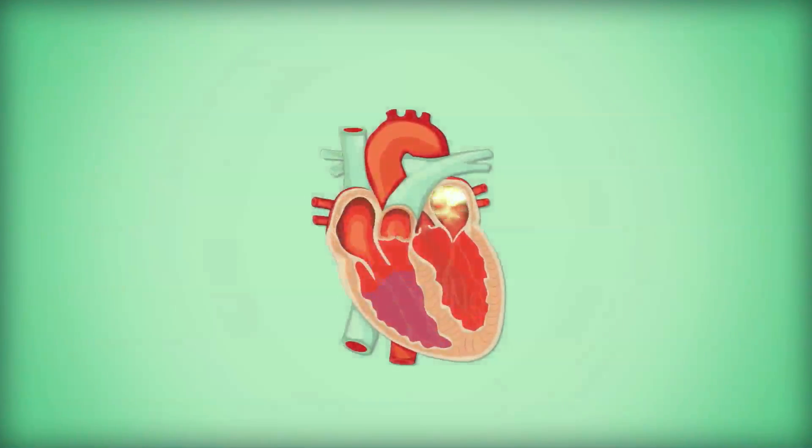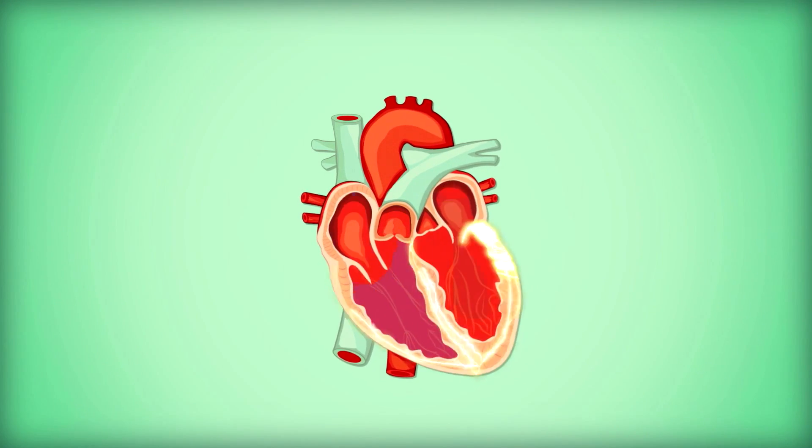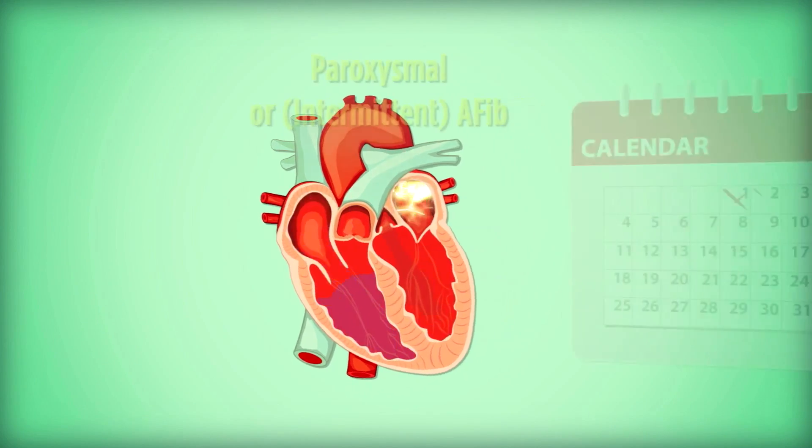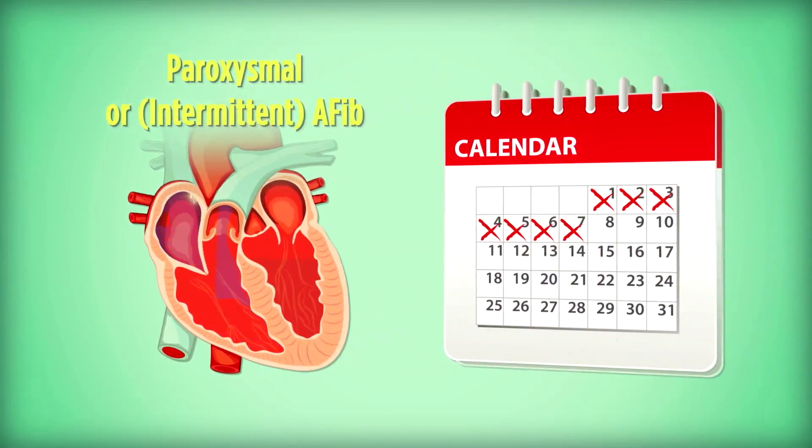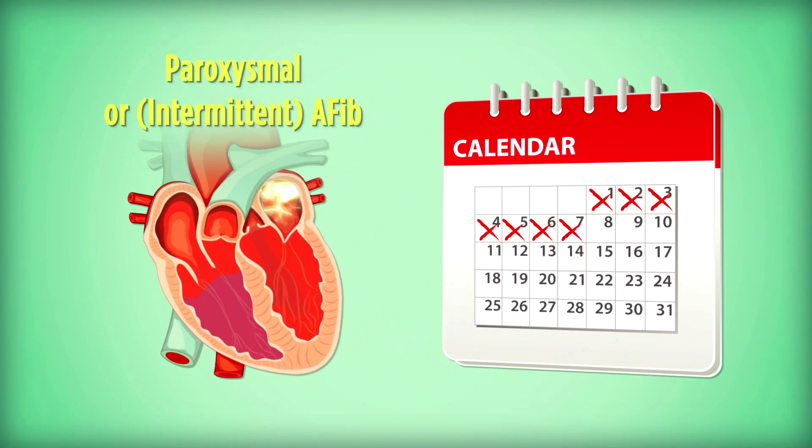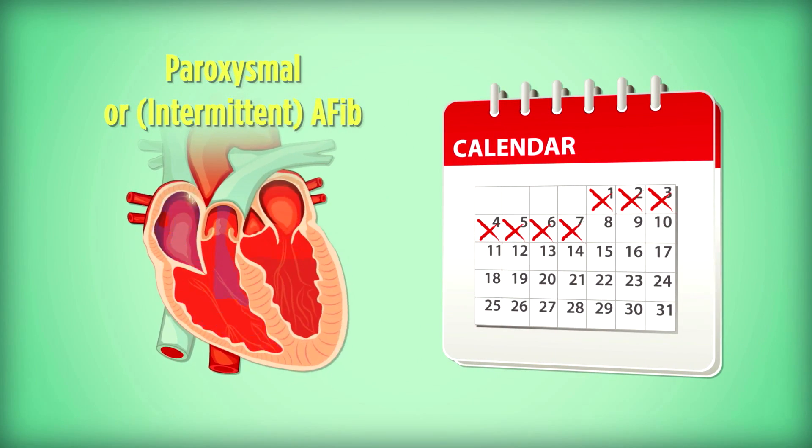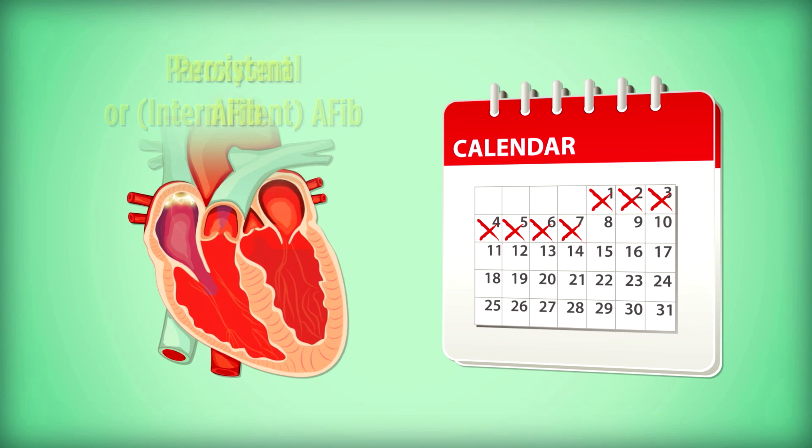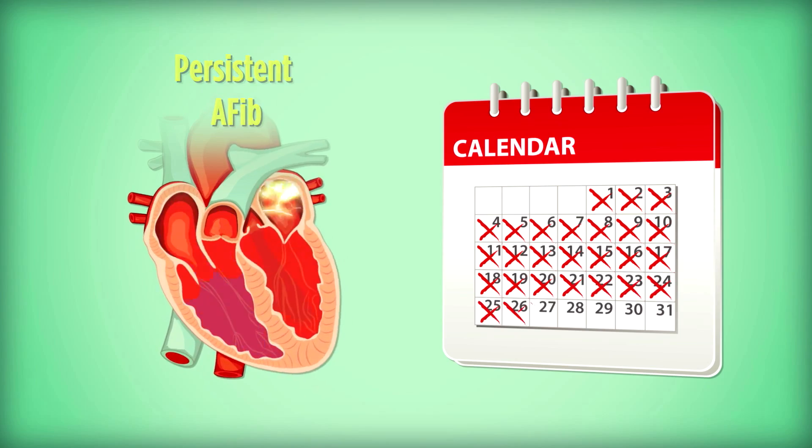AFib is often classified and treated based on how often the episodes occur. Paroxysmal or intermittent AFib is when episodes stop spontaneously but don't last more than 7 days. Persistent AFib is when episodes last longer than 7 days.